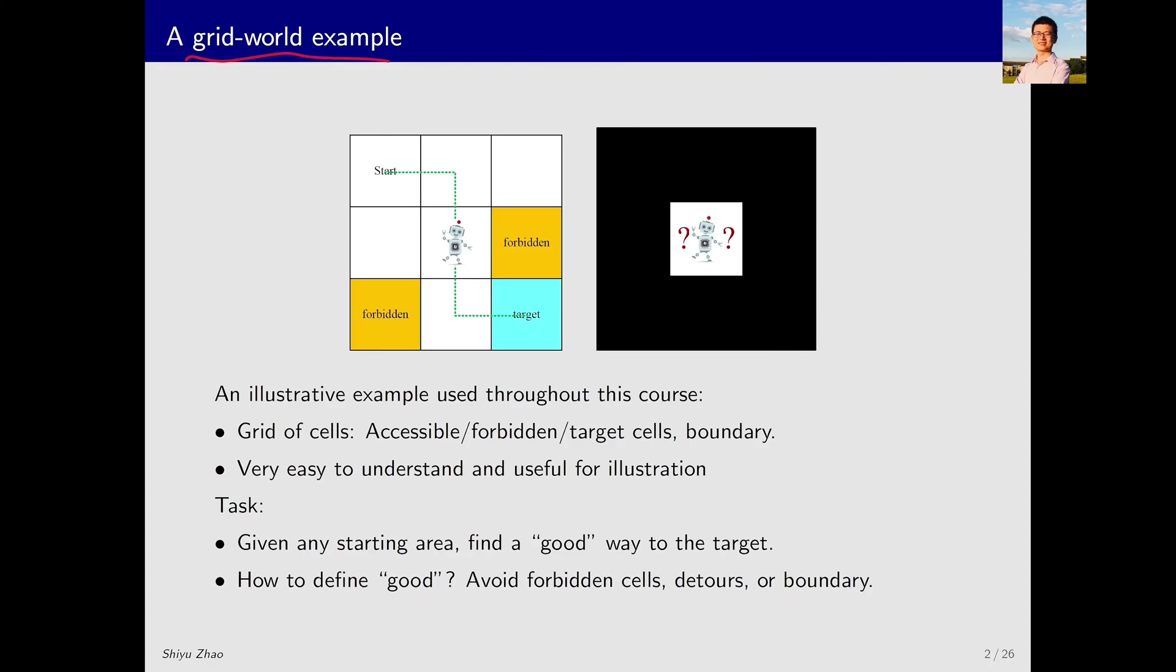There are different types of grid cells. For instance, some cells are accessible, indicated by white, while others are forbidden, indicated by yellow. Additionally, there are target areas the robot aims to reach. This grid world also has boundaries.